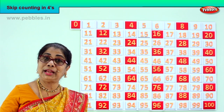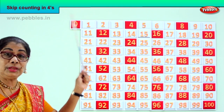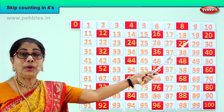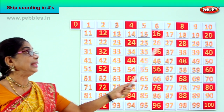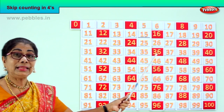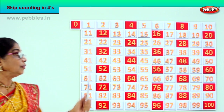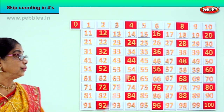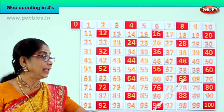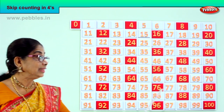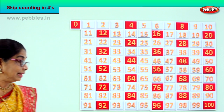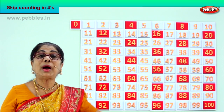Now let's say all the counting in 4s from 0 to 100, and then we look at the pattern. Good. 0, 4, 8, 12, 16, 20, 24, 28, 32, 36, 40, 44, 48, 52, 56, 60, 64, 68, 72, 76, 80, 84, 88, 92, 96, 100.